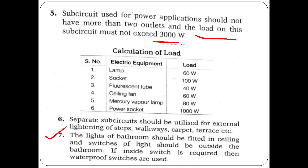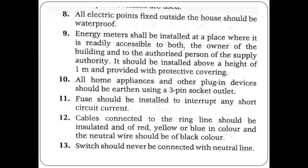Seventh point: the lights of a bathroom should be fitted in the ceiling, and the switches of those lights should be outside the bathroom. If a switch is inside, it should be waterproof. All electric points fixed outside the house should be waterproof.